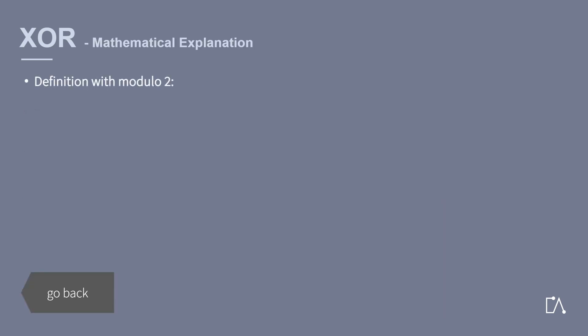This operation can also be defined by making use of the definition of modular calculation. The end result is the same, but the definition is more mathematical. If you want to calculate two bits modulo two, this means you add those two bits, then divide the result by two and afterwards focus on the remainder of the division.